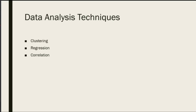Now let's get into data analysis techniques. I'm putting them into three categories to make it more easily digestible. There's clustering, which is when you look at a bunch of data and group data points together. Then there's regression, which is where you're doing trend prediction or classification. And then there's correlation, which is when you look at how two different data sets are correlated, or how multiple variables in your data set are correlated with each other.